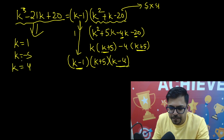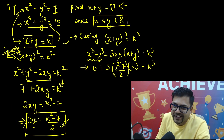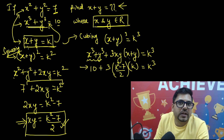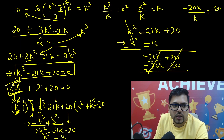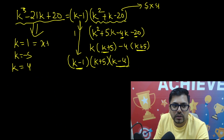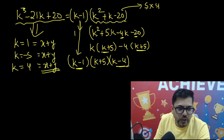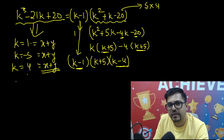So for this cubic equation we got 3 zeros. From (k minus 1): k equals 1. From (k plus 5): k equals minus 5. And from (k minus 4): k equals 4. Since k was assumed to be x plus y, we have three values of x plus y: 1, minus 5, and 4 — all real numbers.